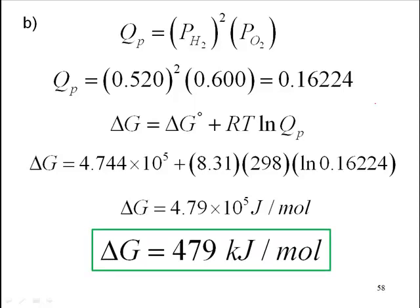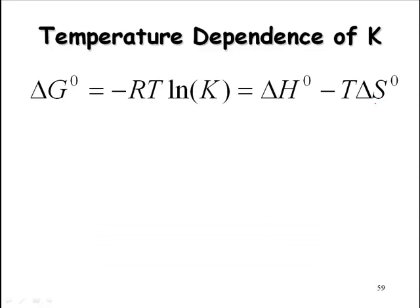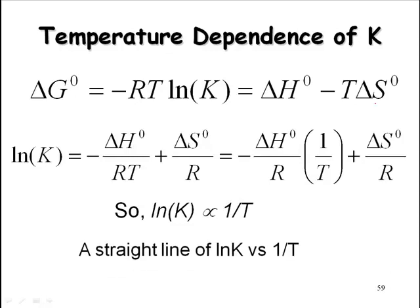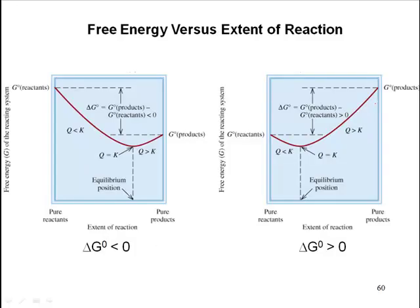The Kp is dependent on temperature. So ln of K is proportional to 1 over T. Straight line of ln of K versus 1 over T. Slope is negative delta H over R. Free energy versus the extent of the reaction.